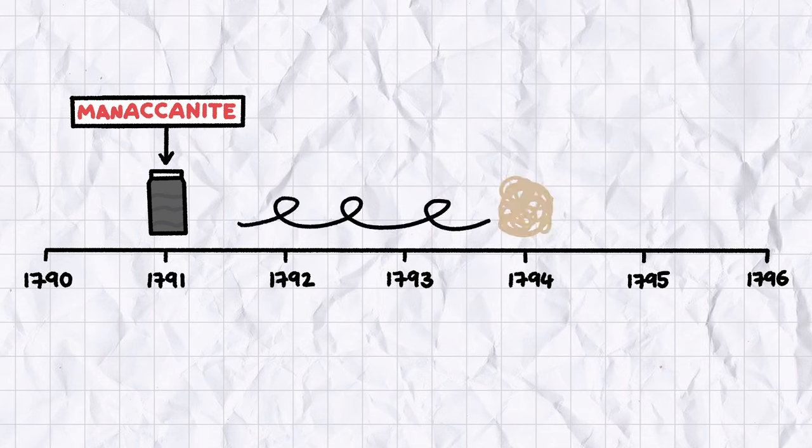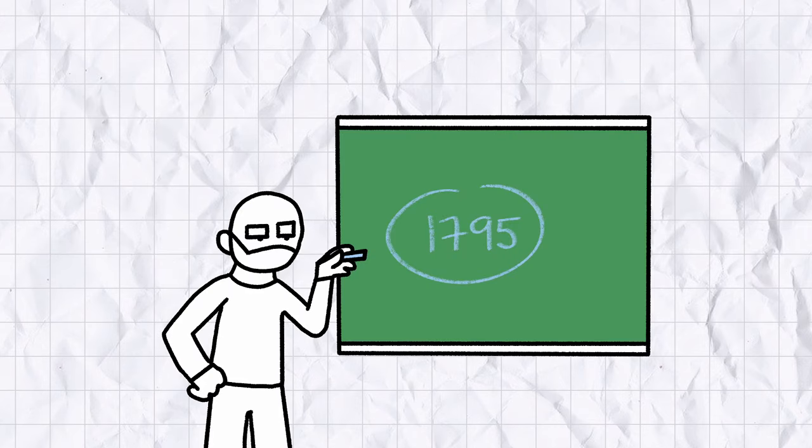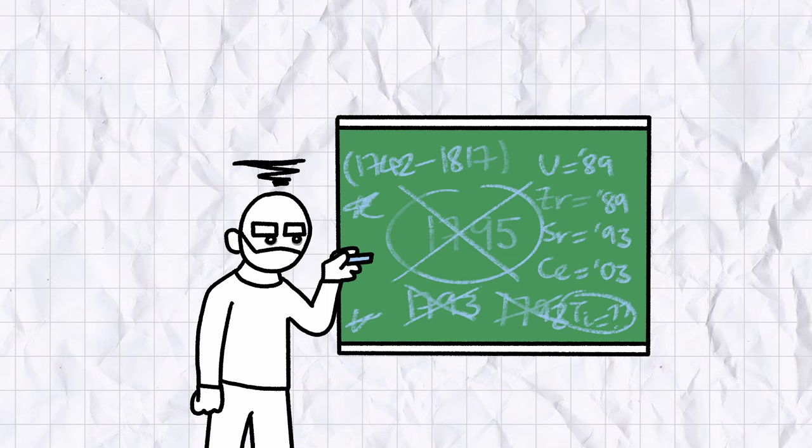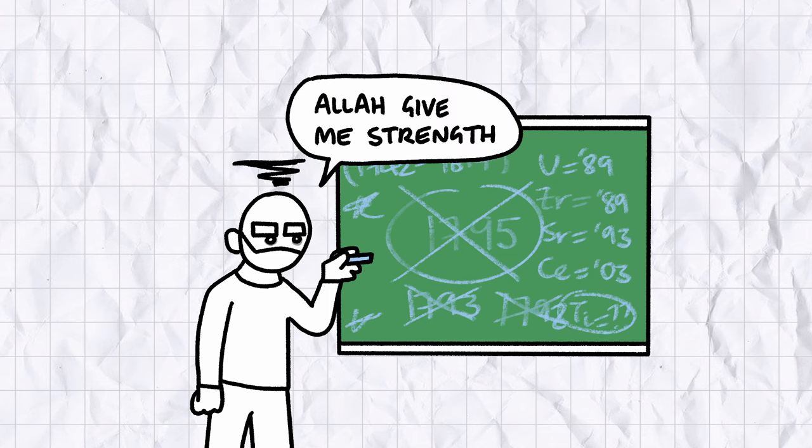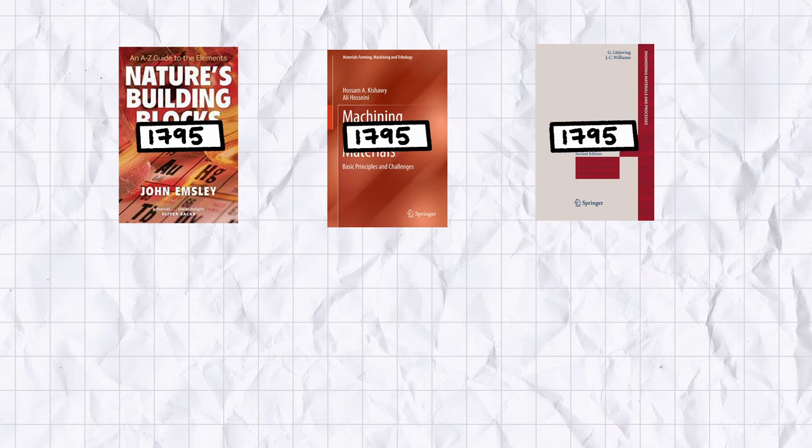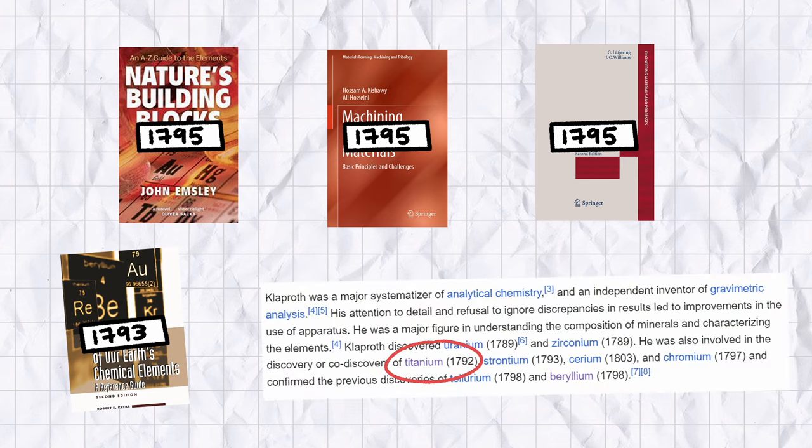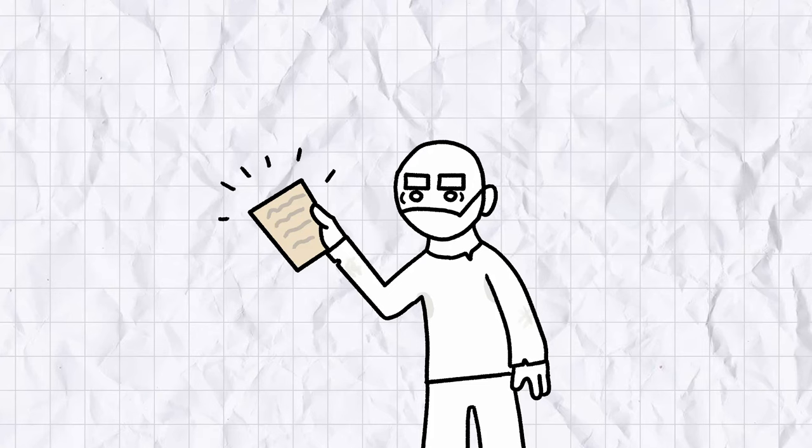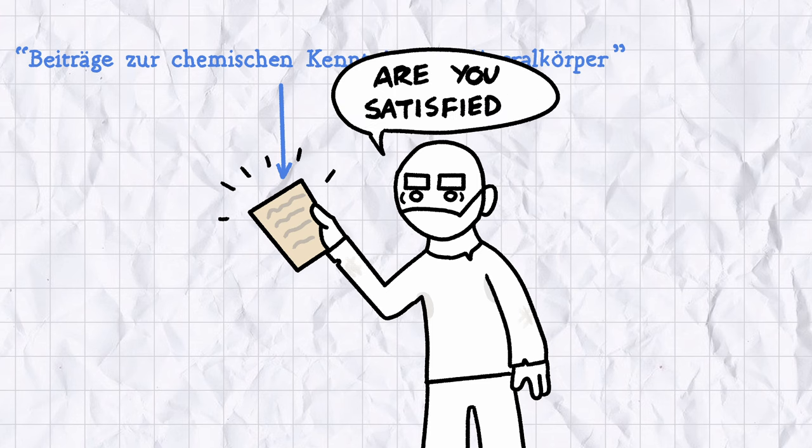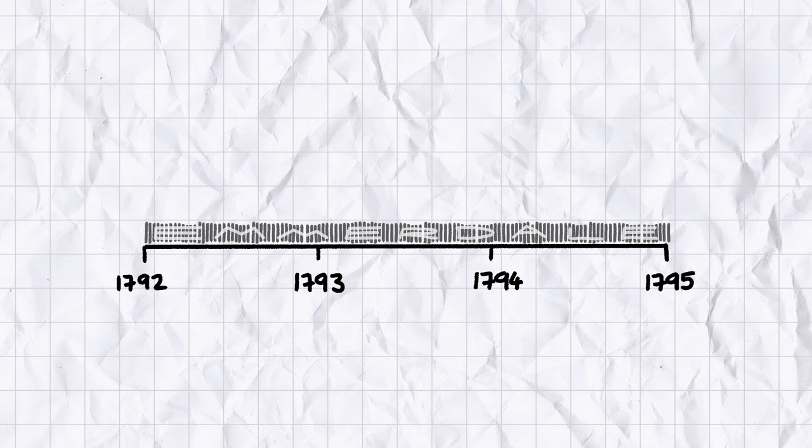But four years passed, and word of a new element did not reach the ears of the German chemist Martin Heinrich Klaproth, who independently discovered titanium in 1795. At least, I think he did. I wanted to double-check this date just to be thorough, so I went back to the books, and I'm pleased to announce that all my research has just made me more cranky and annoyed than I was when I started. This book by Emsley, this book by Kisheway and Hussini, and this book by Lutjaring and Williams say that Klaproth discovered titanium in 1795, but this book by Krebs says it was in 1793, and Klaproth's Wikipedia page says it was 1792, without citing a source. I did eventually find a primary source from 1795, a treatise in inorganic chemistry written in 18th century German, but scientific historians, get your house in order, please. Three years is a pretty big gap. That's enough time to make like 900 episodes of Emmerdale, or for me to upload like five new videos.